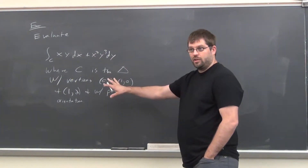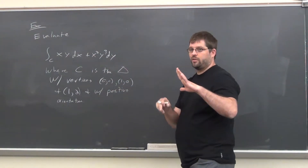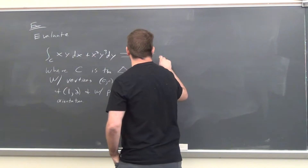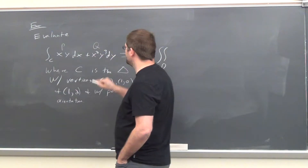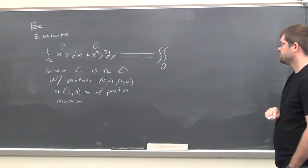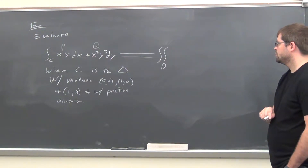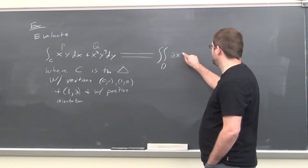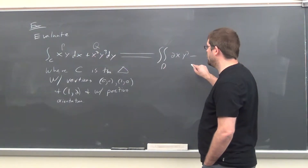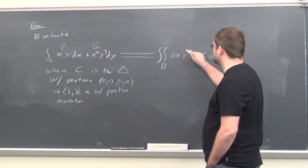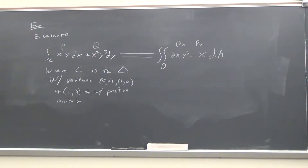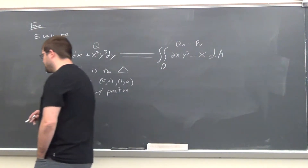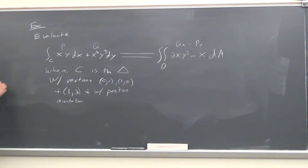Without even looking at the region, we know we've got a triangle and we're tracing around it. This becomes the double integral over D. There's your P, there's your Q. Q sub x is 2x·y³ minus P sub y, which is x. The line integral needs to be the integral around some closed loop.